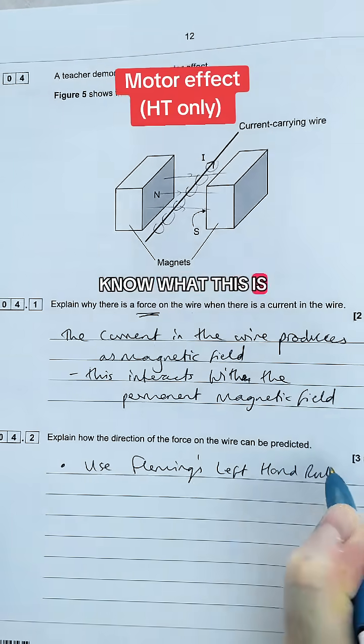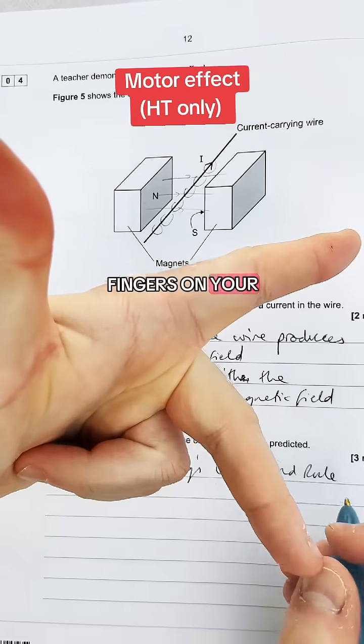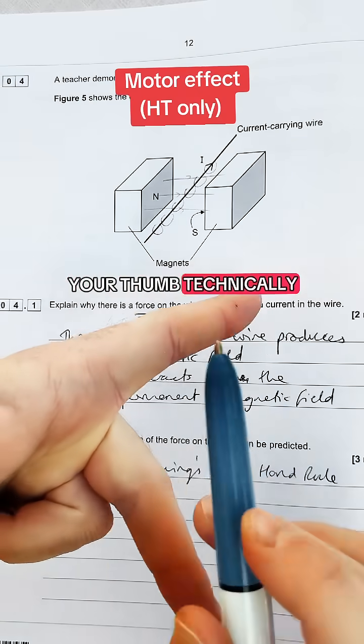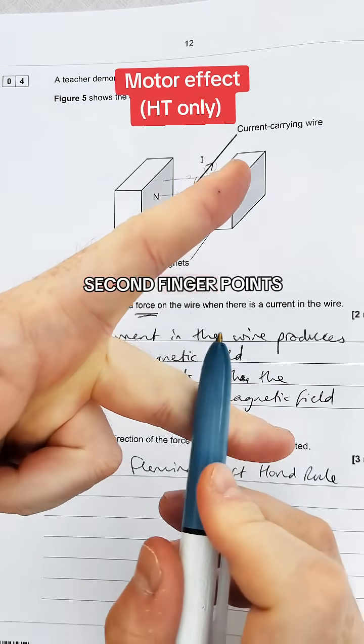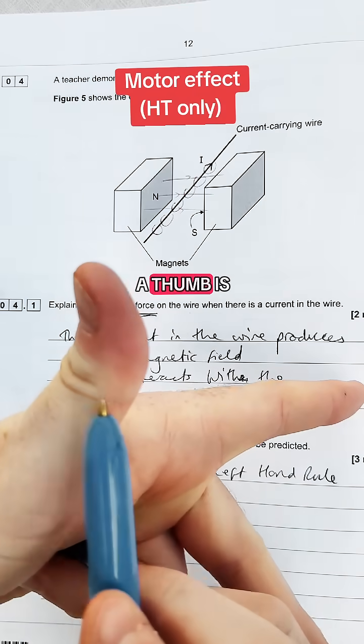If you don't know what this is listen up. So you've got three fingers on your left hand or two fingers and a thumb technically. The first finger points in the direction of the field. The second finger points in the direction of the current and that means the thumb is in the direction of the force.